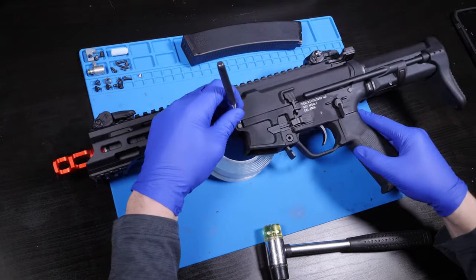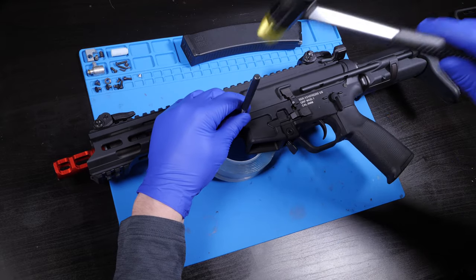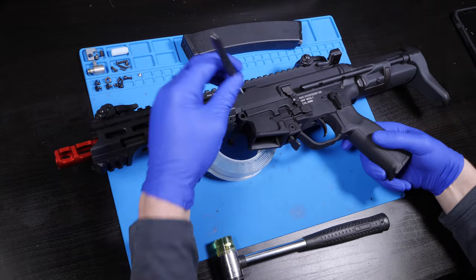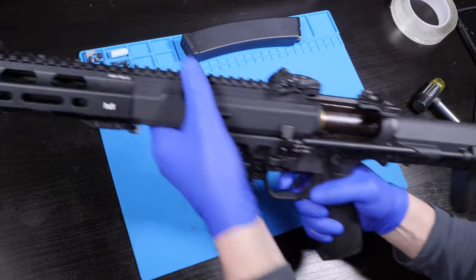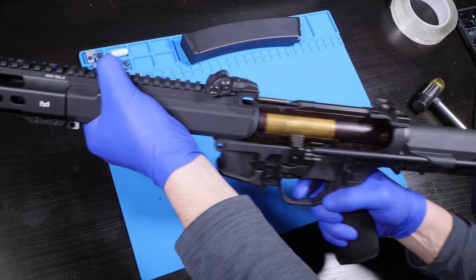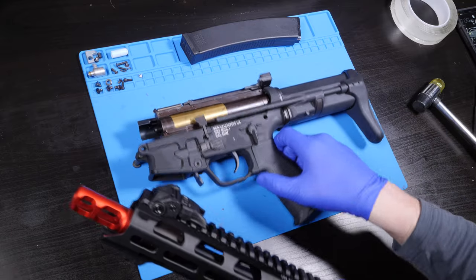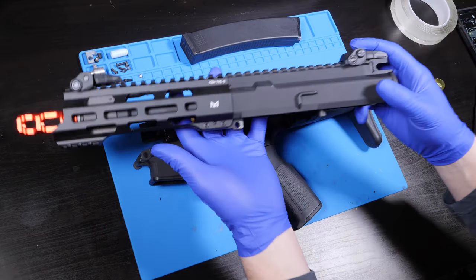Here we have the QRF mod 1, and without any hesitation I'm gonna rip this thing open to access the gearbox. I'm first gonna split the upper from the lower by removing both body pins. Pulling the charging handle back is gonna allow the upper to slide forward and off. I will do some work on the upper and the rail system later, so let's just set this aside for now.